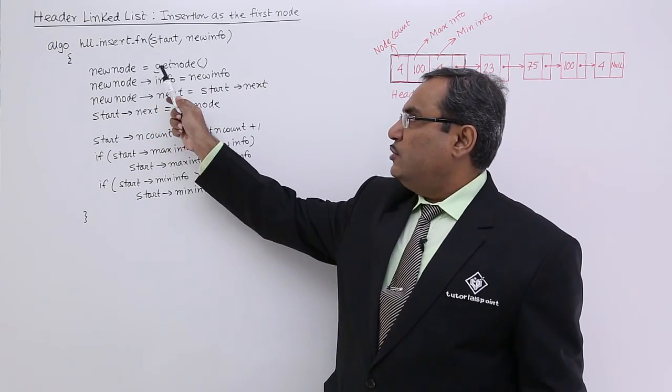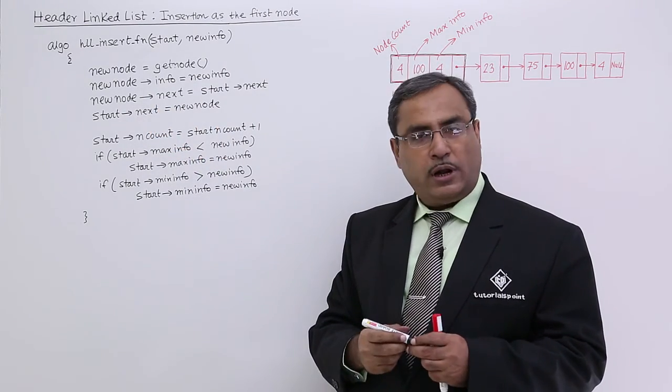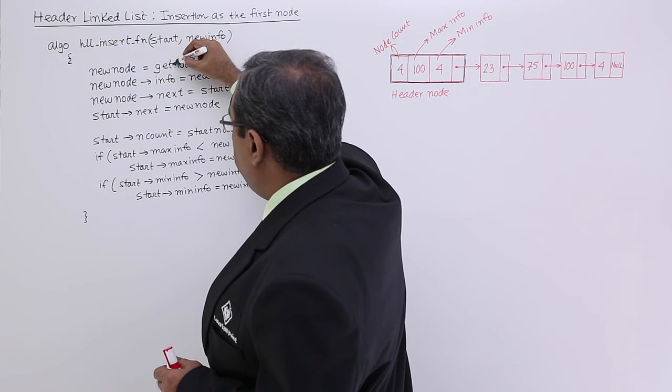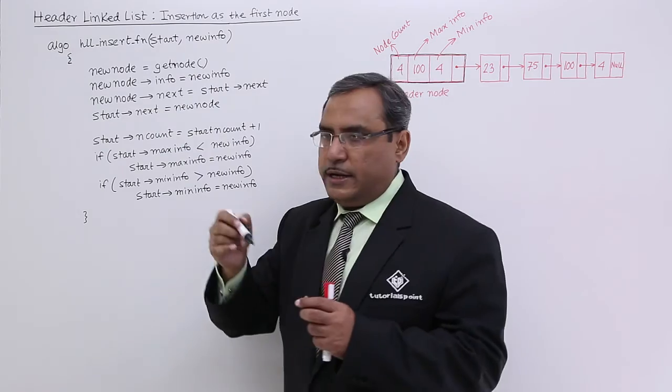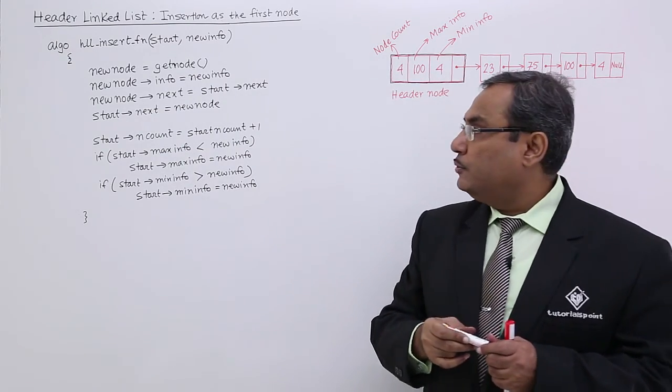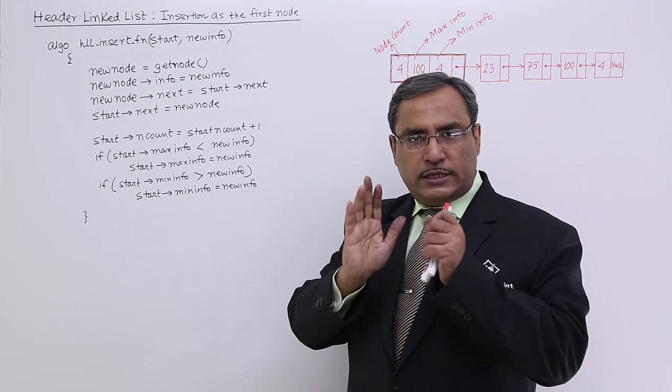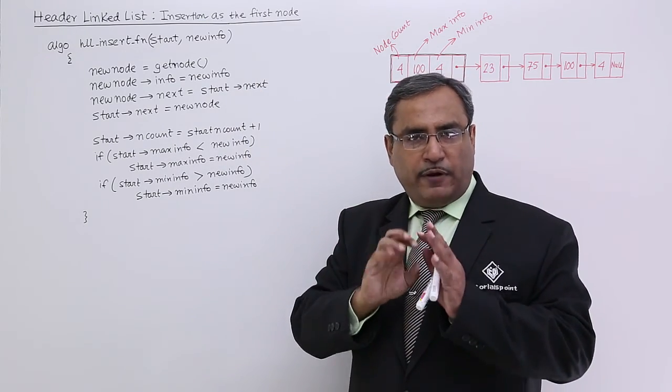So new node equals get node. We use this particular code earlier also. That means this particular new node is getting updated with the return address from the function get node. New node info equals new info. So new node is now ready to get inserted. Info has got updated.